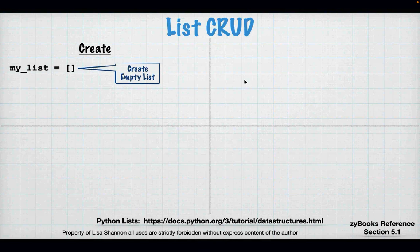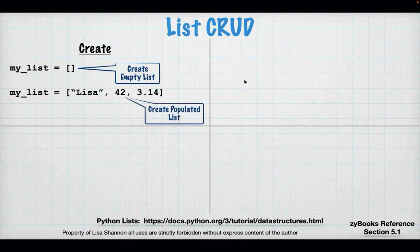Variables always work the same way — it doesn't matter if it's a collection on the right-hand side, it always needs a single equal sign. I can also create a populated list; here I have three elements: Lisa, the number 42, and the float 3.14. This demonstrates that a list doesn't have to contain the same type of element — Python doesn't care about mixed types.